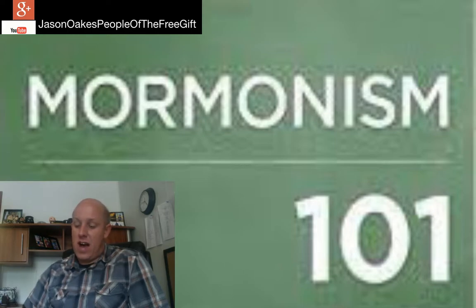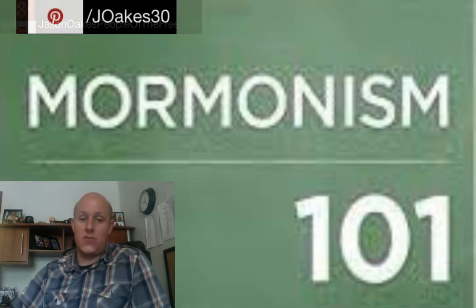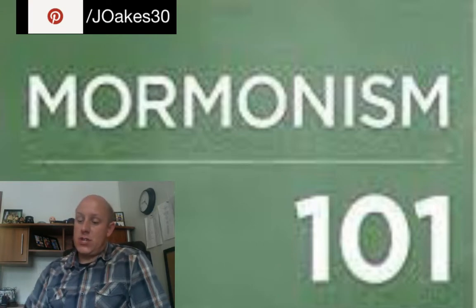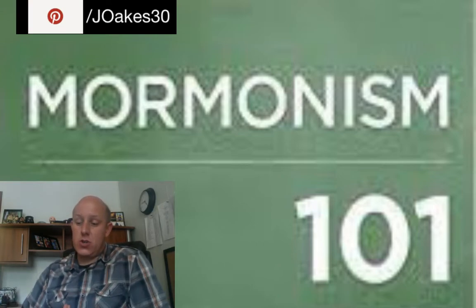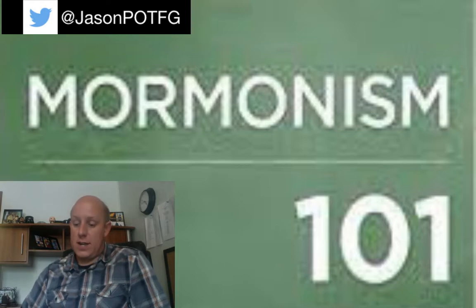Celestial Heaven: the highest of the three levels of heaven where faithful Mormons are exalted to godhood. Church: the LDS Church with its organizational structure, laws, and proper name. Damnation: basically anything lesser than exaltation, which means becoming a god.